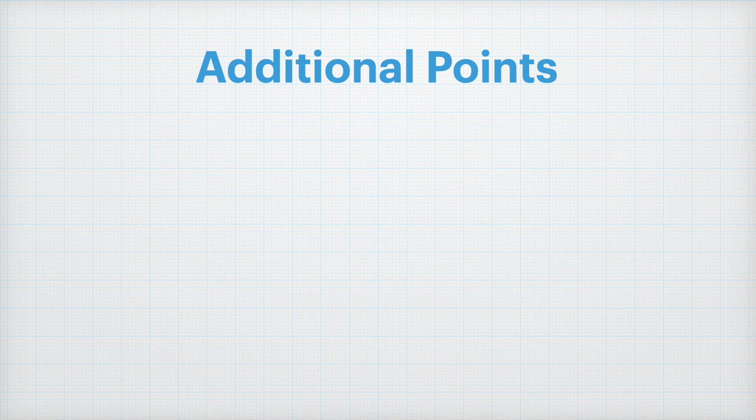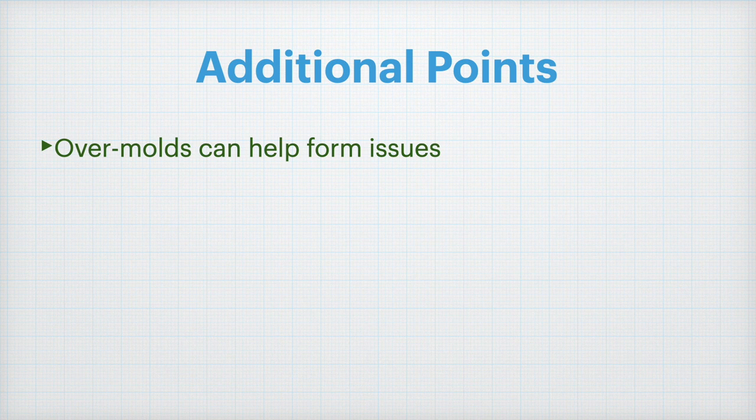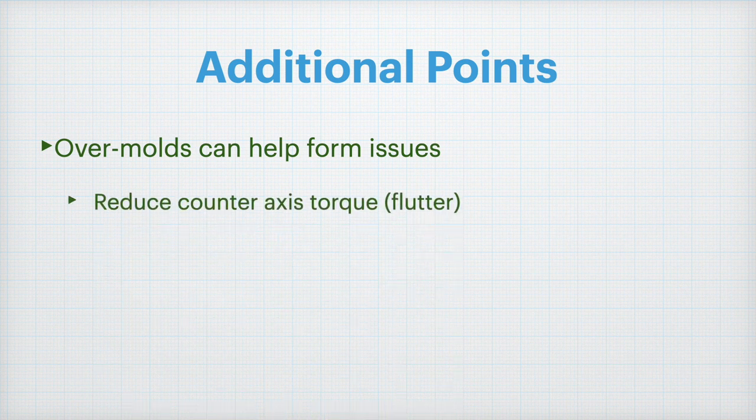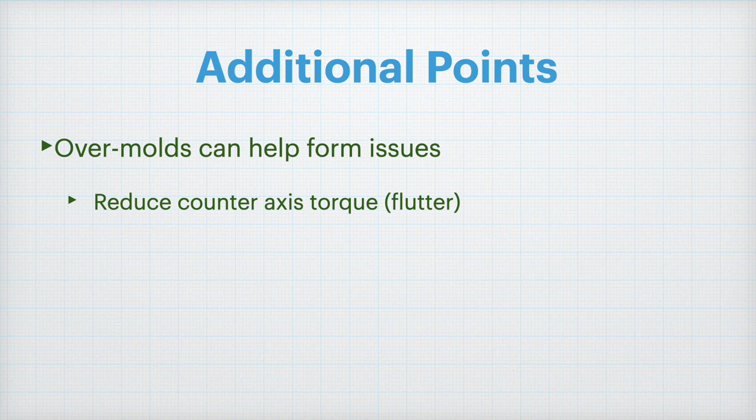I do have a few additional points I want to get to. First off, overmolds can help with form issues. Specifically though, they are more likely to reduce counter axis torque or flutter. This can be especially helpful for a forehand throw.